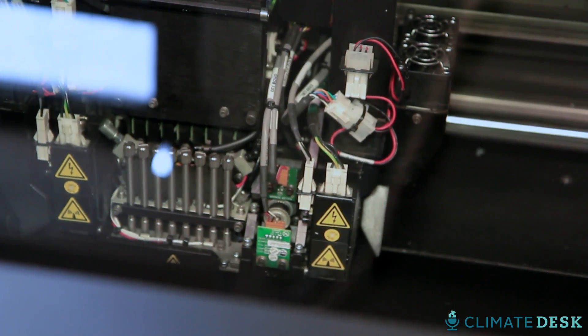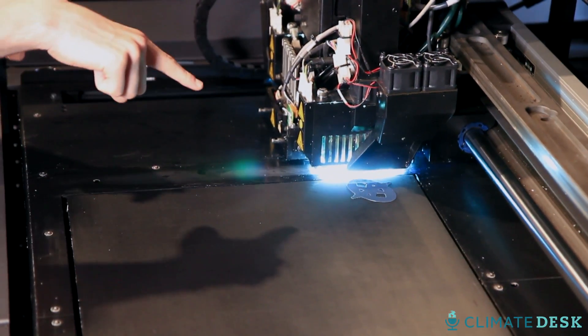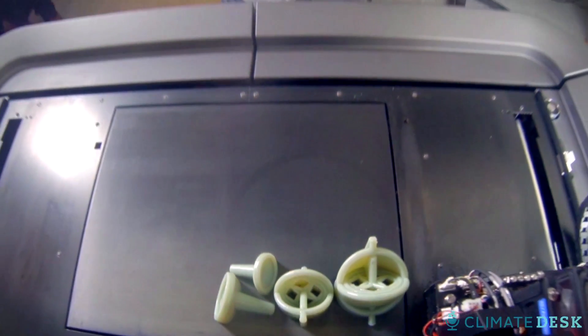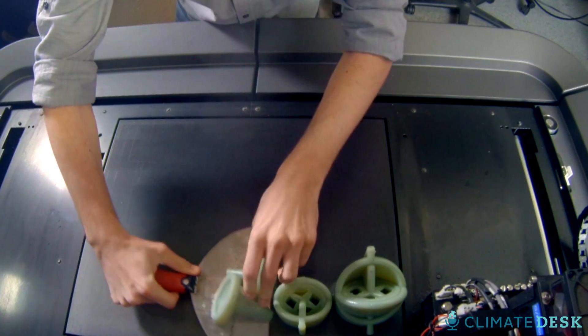But instead of ink, the printer lays out a single layer of material and prints another layer right on top of it. Layer upon layer, in a matter of hours, objects take shape, encased in a custom designed protective shell.